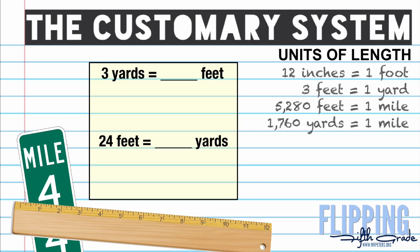I have two problems here: three yards equals how many feet, and 24 feet equals how many yards. Since yards are bigger than feet we have to multiply. We find that there are three feet in each yard, so we take three yards multiplied by three feet to get the answer of nine. So there are nine feet in three yards.